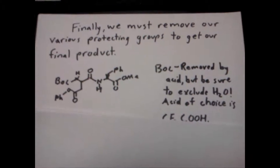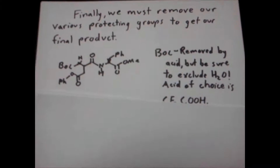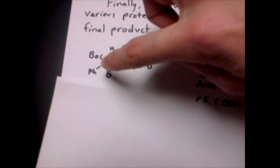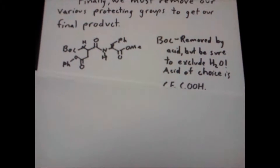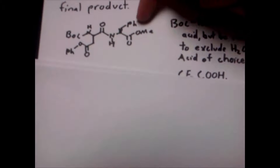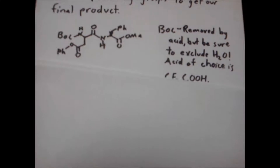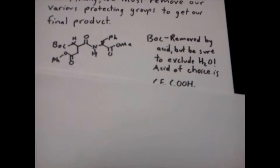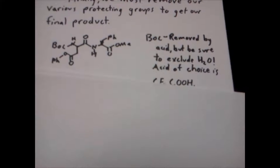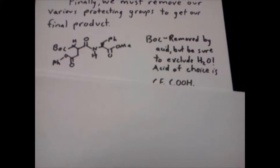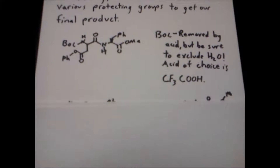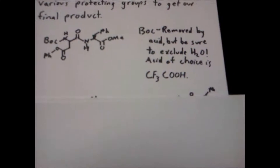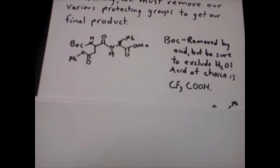Finally, we must remove our various protecting groups to get our final product. The Boc group, visible in the upper left-hand corner, may be removed by acid — but be sure to exclude water, because adding water with acid would replace and turn the phenyl ester back into a carboxylic acid. That's the reason we used methanol as solvent in the first place. The acid of choice here is trifluoroacetic acid, which we use because it does not contain water but does donate protons, so it will remove the Boc group.